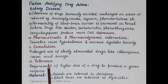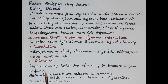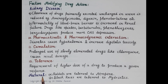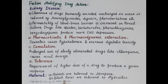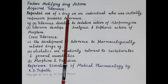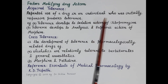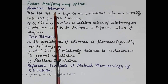Another important factor is tolerance — the requirement of a higher dose of a drug to produce a given response. Tolerance can be natural, acquired, or cross tolerance. Natural tolerance: rabbits are naturally tolerant to atropine, and black races are tolerant to mydriatics. Acquired tolerance develops when repeated use of a drug in an individual who initially responds leads to a diminished response over time.